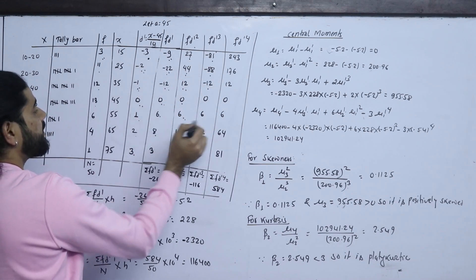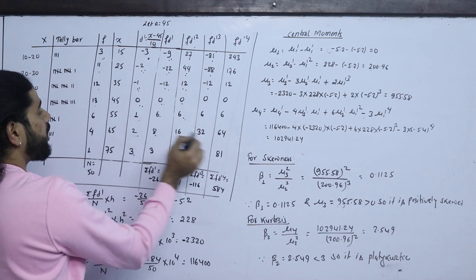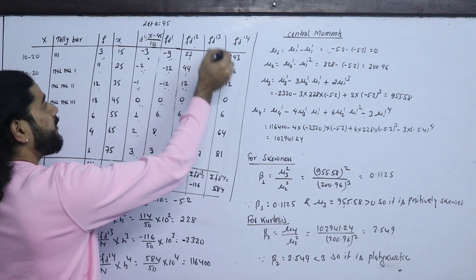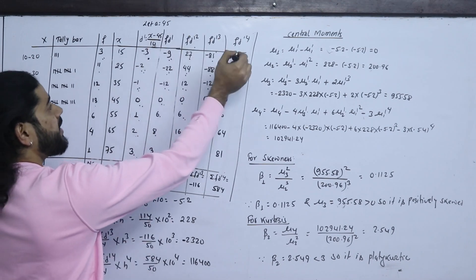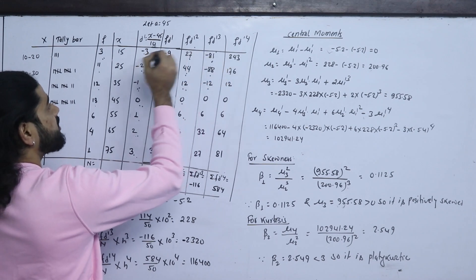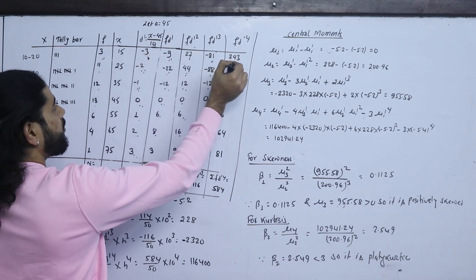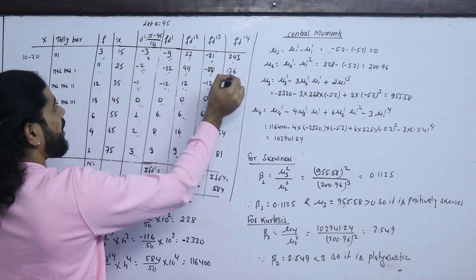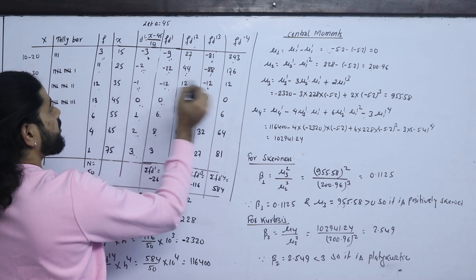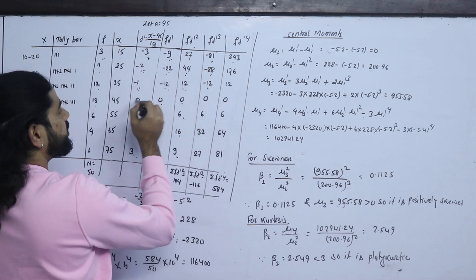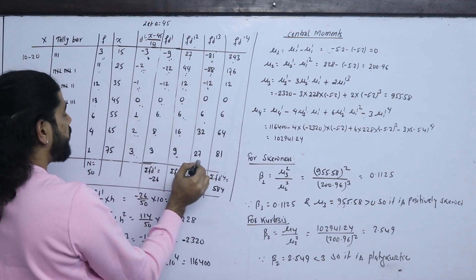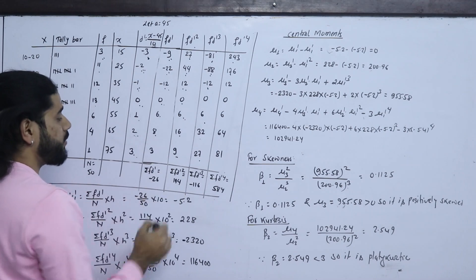FD'³ and FD'⁴ calculations: 1, 6; 60 × 2 = 32 (approximately); 9 × 3 = 27. FD' cube and FD' power 4: (−81) × (−3) = 243; (−88) × (−2) = 176; (−12) × (−1) = 12; 12 × 0; 6 × 1 = 6; 6 × 4; 32 × 2 = 64; 27 × 3 = 81.